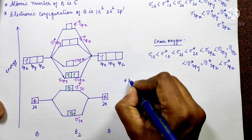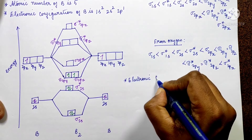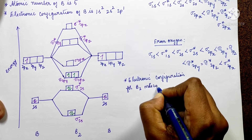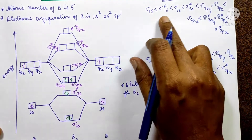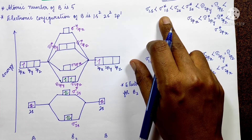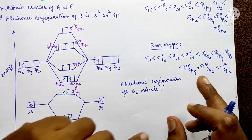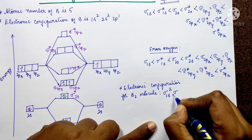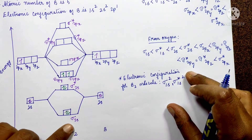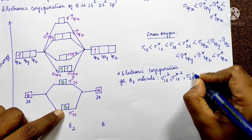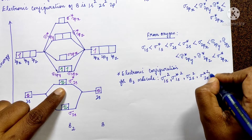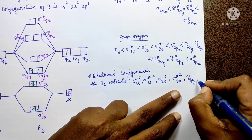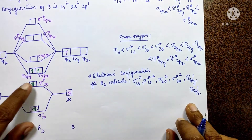Now we write the electron configuration for the boron molecule (B₂). Starting from the completely filled inner orbitals: σ1s², σ*1s², σ2s², σ*2s², and then the remaining electrons go into the π2p orbitals.